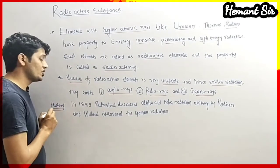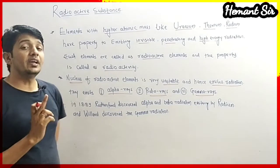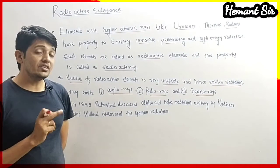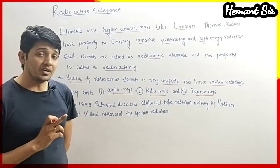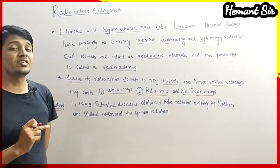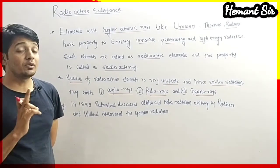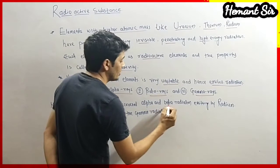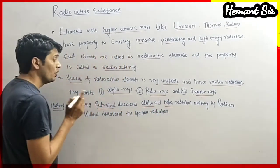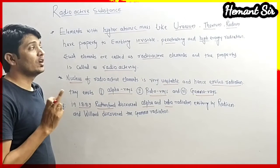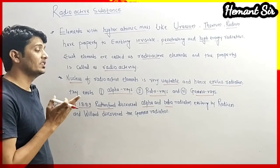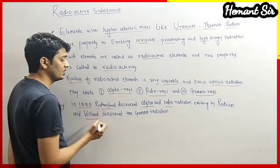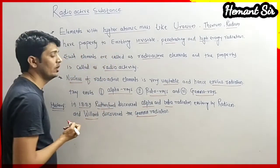Let's understand the history of radiation. In 1889, Rutherford discovered two types of radiation: alpha radiation and beta radiation. In the same year, Willard discovered the third radiation, which is gamma radiation. Rutherford discovered alpha and beta radiation from radium metal, whereas Willard discovered the third radiation called gamma radiation.